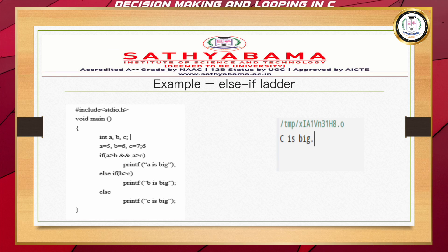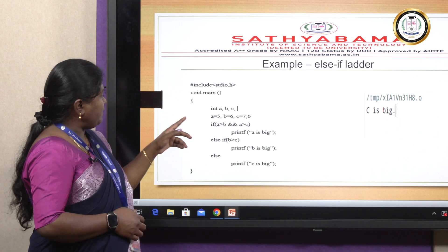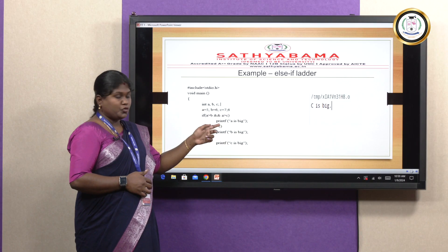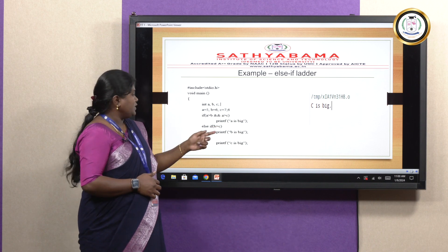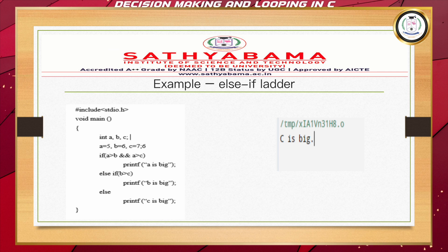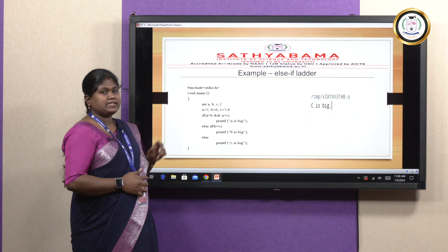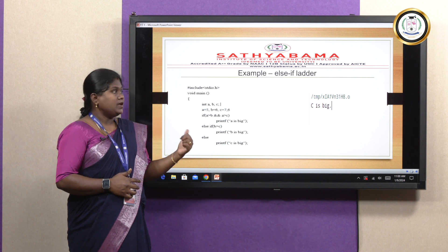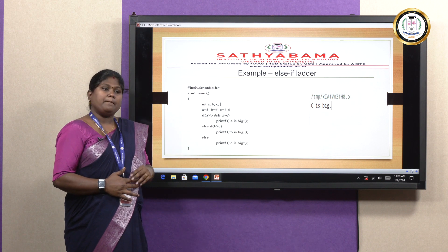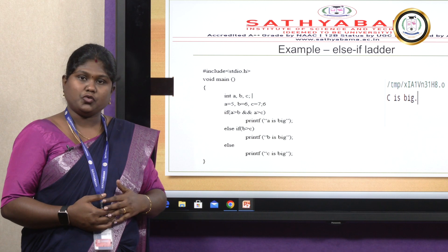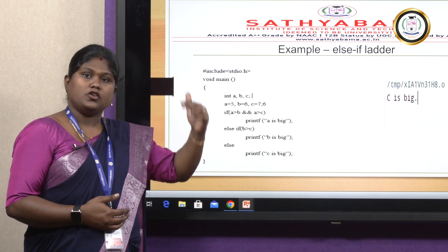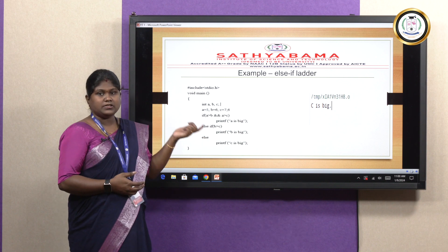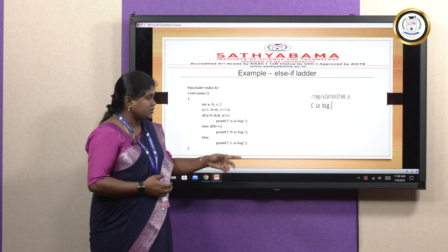The example program is the same biggest-among-three-numbers problem. If a is greater than b and a is greater than c, print 'a is big.' Otherwise check if b is greater than c — if true, print 'b is big'; else print 'c is big.' The disadvantage of the else-if ladder is time consumption: if you place 10 conditions and the 9th is true, it checks from condition 1 all the way through. All conditions must be checked until a true condition or the else block is reached.